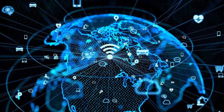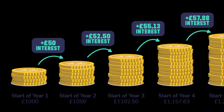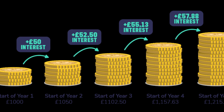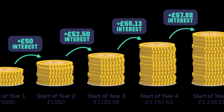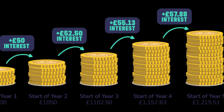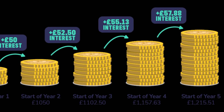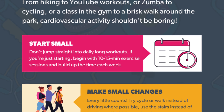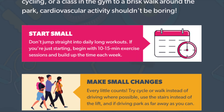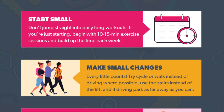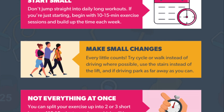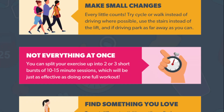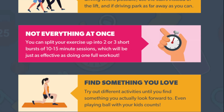For example, if you invest a small amount of money each month in a compound interest account, your money will grow exponentially over time. Similarly, if you make small changes to your diet and exercise habits, you can see big results over time.